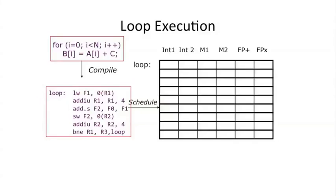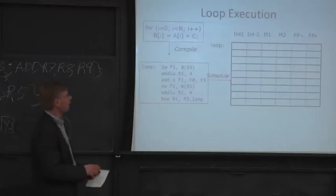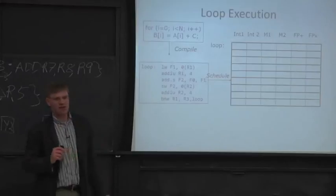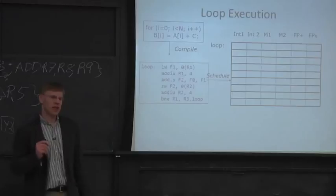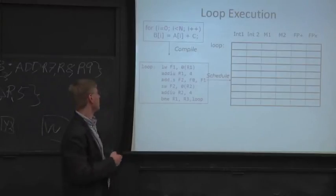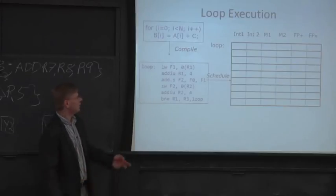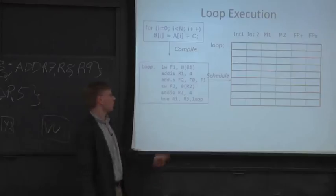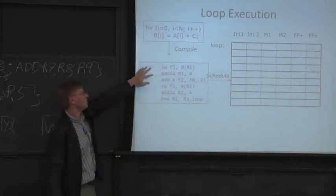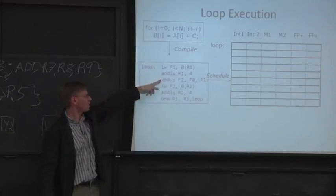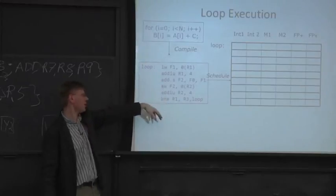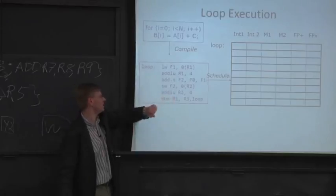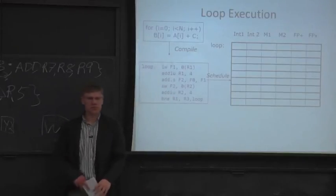So let's see how we execute some code here and what are the performance aspects to executing loop code on a very long instruction word processor. Here we have a very basic array increment. We're going to take every element of this array and increment it by the value c. We run it through our compiler, and here's a sequential code sequence. This has not been scheduled yet for our VLIW architecture. So we load the value, we increment our counters, we actually do the floating point add, we store the value back, we increment the array index, and then we loop. Seems simple enough.